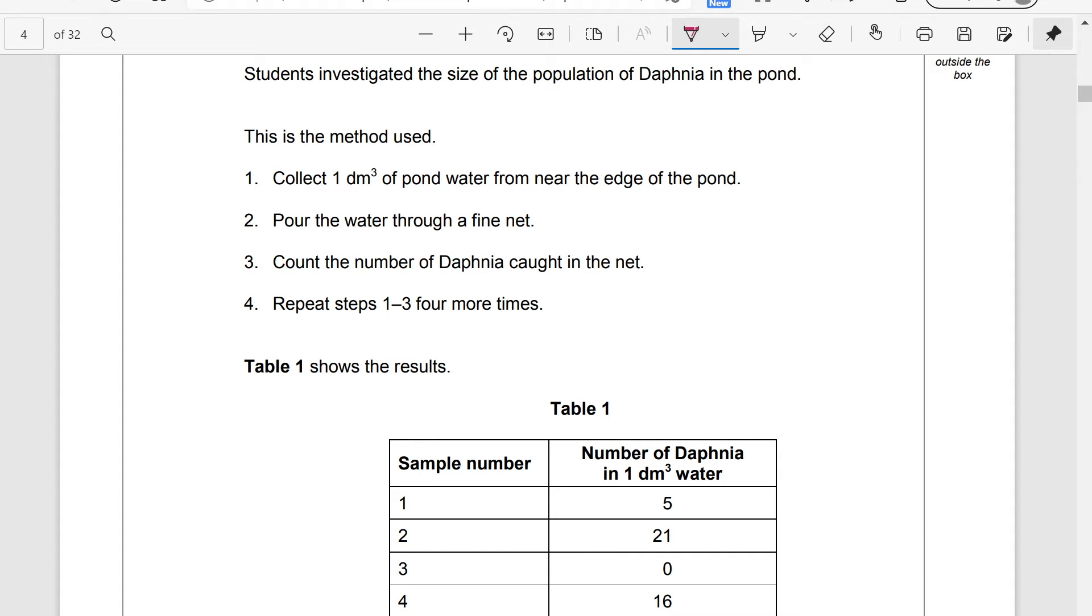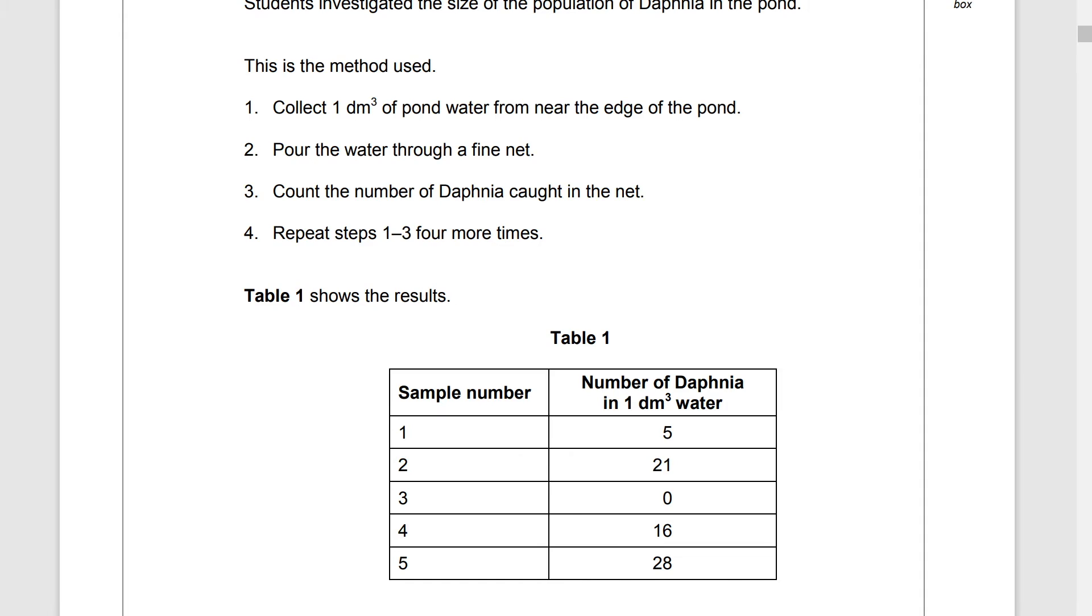Students investigated the size of the population of Daphnia in the pond. This is the method used. Collect one decimetre cubed of pond water from near the edge of the pond. Pour the water through a fine net. Count the number of Daphnia caught in the net and repeat the steps one to three four more times. Table one shows the results. We've got five samples and the number of Daphnia in one decimetre cubed of water.